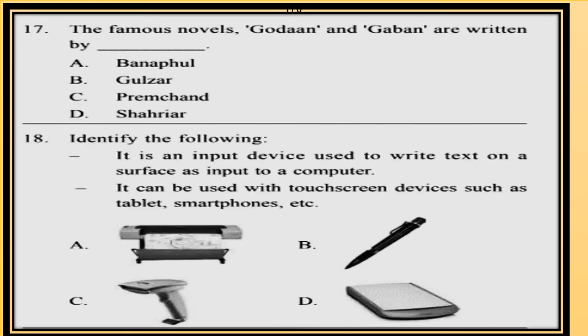Question 17. The famous novels 'Godaan' and 'Gaban' are written by: A. Pannalal, B. Gulzar, C. Premchand, D. Sharyar.